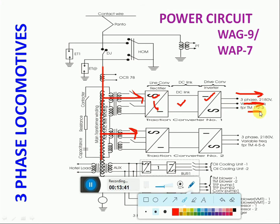In WAG9, 6 traction motors are available. From traction converter 1, traction motors 1, 2, 3 get supply. From traction converter 2, the supply is given to traction motors 4, 5, 6 — in the case of WAG9 and WAP7. In the case of WAP5, from traction converter number 1, TM1 and TM2 get supply, because in WAP5 only 4 traction motors are available.